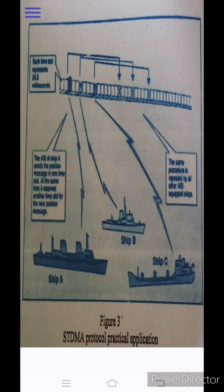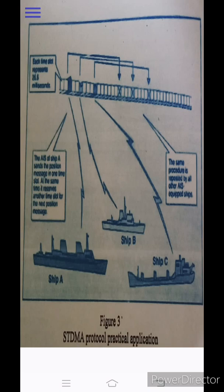Each ship broadcasts its AIS message and receives messages from all ships within VHF radio range. The area in which AIS messages can be received is called a ship cell, and each ship is the center of its own communication cell. The practical size of the cell varies according to traffic density. If the number of AIS stations begins to overload the network, the ship's AIS system can automatically shrink its cell by ignoring weaker, more distant stations — similar to how ARPA acquires closer targets in dense traffic.